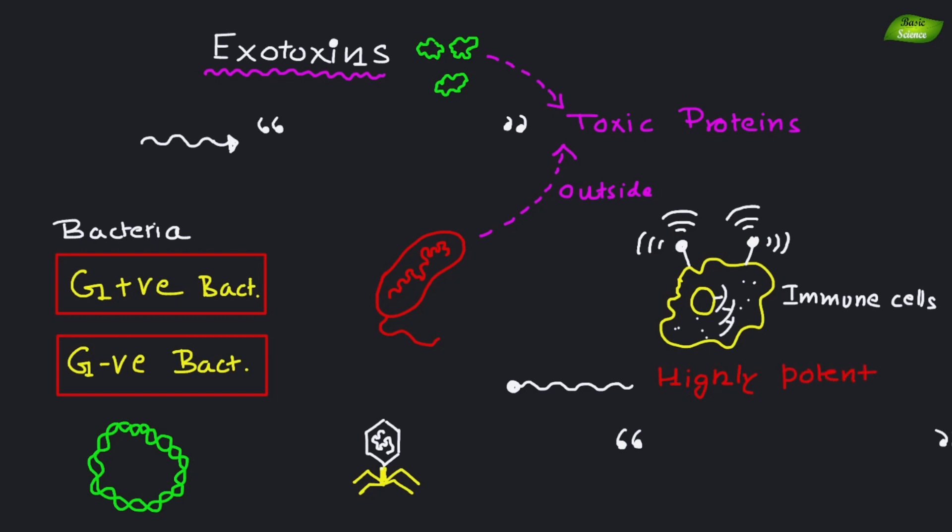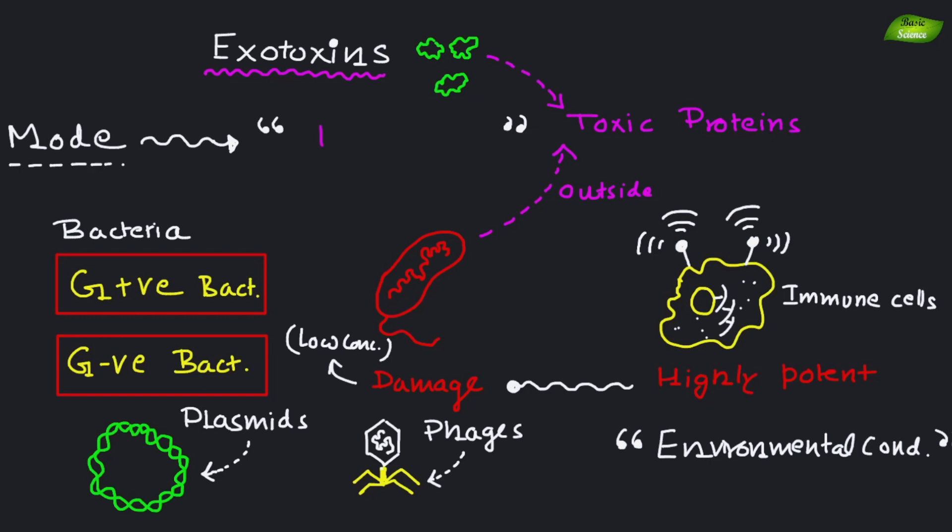Exotoxins are highly potent and can cause damage even at very low concentrations. Exotoxins are often encoded by plasmids or bacteriophages, and their production can be regulated by environmental conditions. They are categorized based on their mode of action and target tissue.